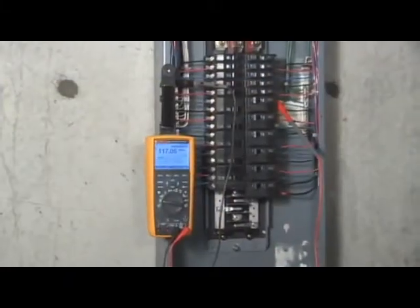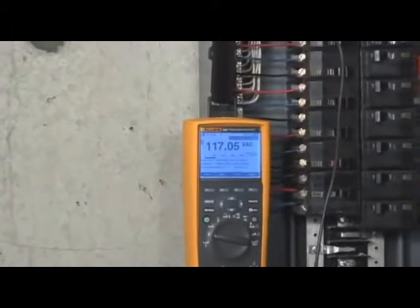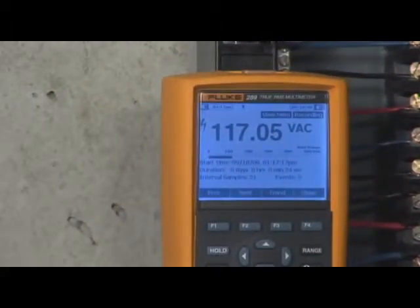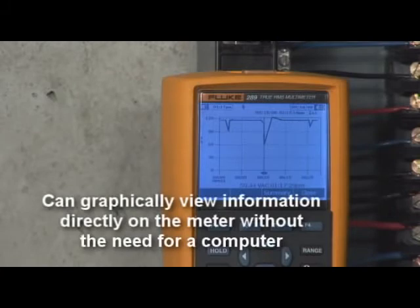Trend Capture is a major enhancement over other logging DMMs, which must upload data to a computer to graph and view the results. Unlike these other DMMs, the Fluke 280 series digital multimeter has the ability to graphically review information on the meter immediately after the recording session is completed.